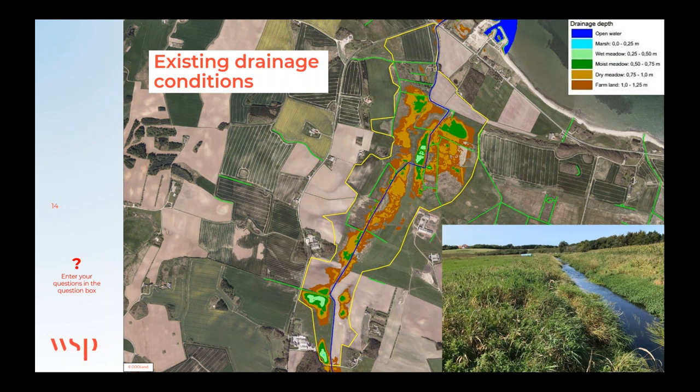We divide the drainage depths into 25-centimeter contours and give a different color to each contour. In this example, the area is colored brown and dark green — brown indicates the water level is one meter to one meter 25 centimeters under the terrain. This is confirmed in the field photo, where the stream is much lower than the grazing area to the left and the cornfield on the right.